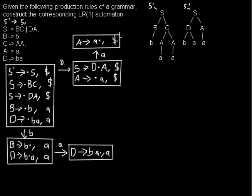That was the only rule with terminal 'a' behind the dot. When we enter this state, we've read the full right-hand side of A → a, meaning we got a full A. We go back and are allowed to move the dot over that A, giving us a new state where the dot is at the end of the A rule.